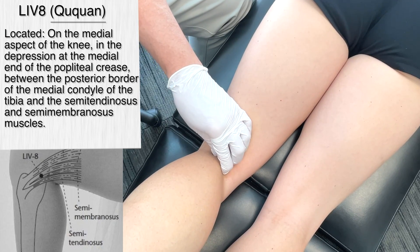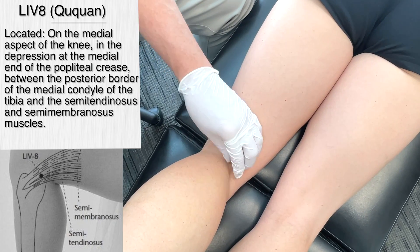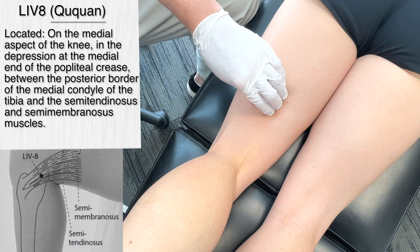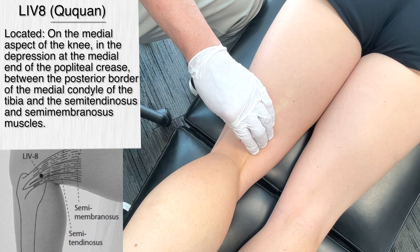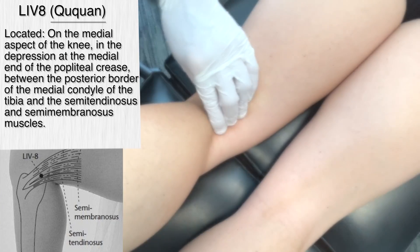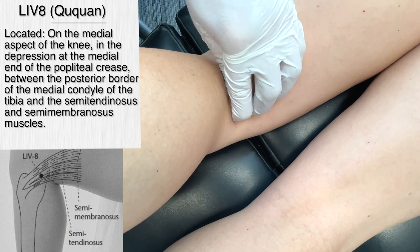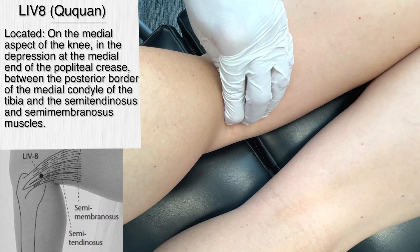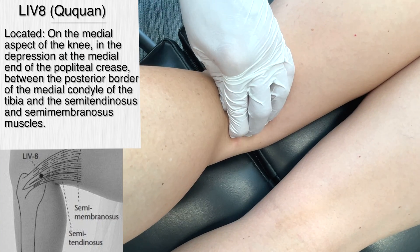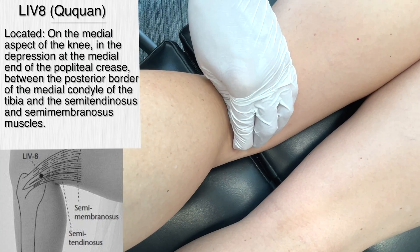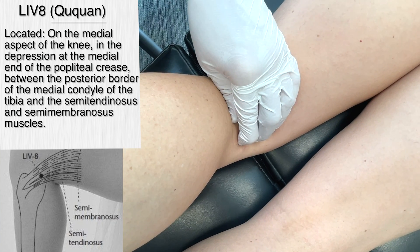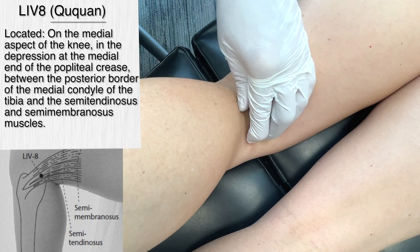The next point we're going over is Liver 8, on the medial aspect of the knee. With the knee flexed, the point is in the depression on the medial end of the transverse popliteal crease, on the posterior border of the medial epicondyle of the femur. It's also on the anterior portion of the insertion of the semitendinosus and semimembranosus muscles.